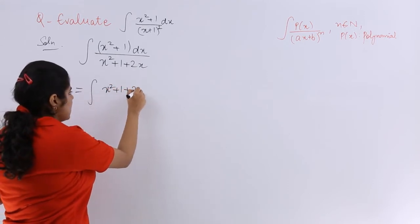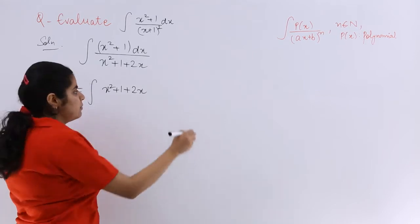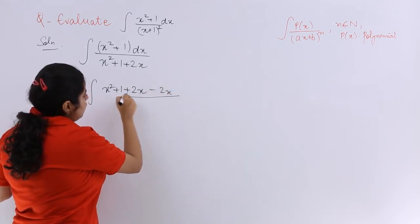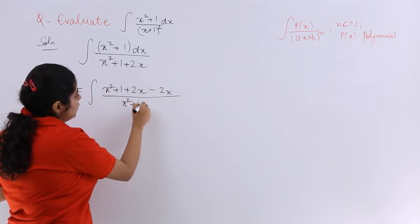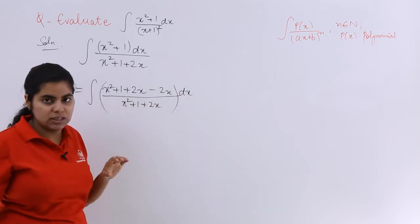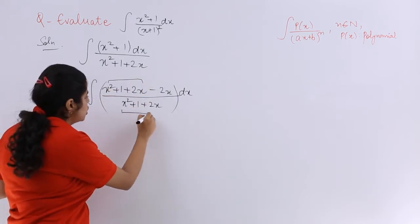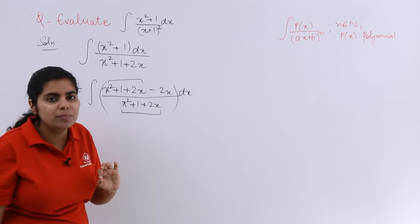If I have to introduce 2x, I add the numerator with 2x. But if I add something in mathematics, I will also have to balance it by subtracting 2x. So we do something like this. Now you see, now we have already x² + 1 + 2x, which is also there in the denominator.